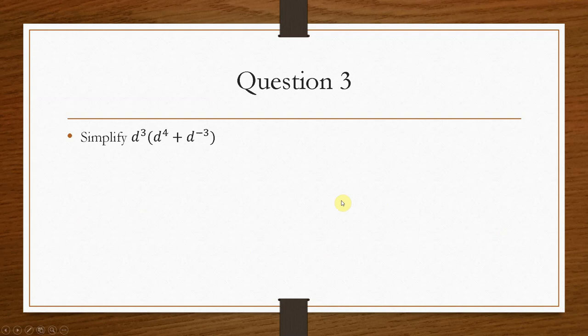So if we have a look at question 3, it gives us the equation d cubed bracket d to the power 4 plus d to the minus 3. So the first thing we have to do is multiply out the bracket. So do d cubed times d to the power 4 plus d cubed times d to the power minus 3.